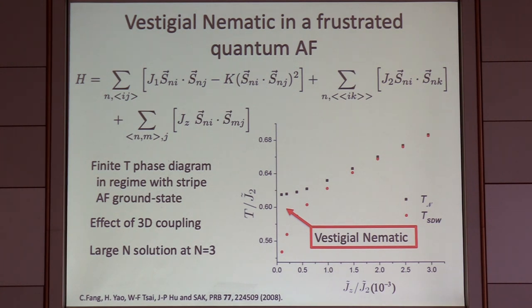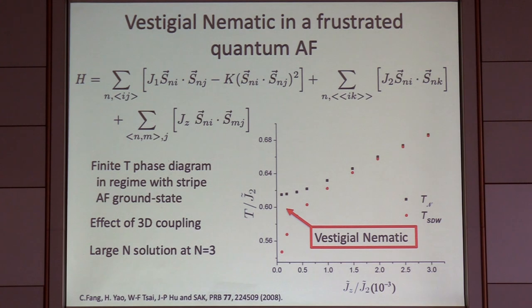The bad news is that the spin density wave line comes screaming up awfully fast. By the time the system is a tenth of a percent anisotropic, this phase has almost disappeared. So this physics of the vestigial nematic phase, which I think we all love, is actually much more delicate than we would like to believe.